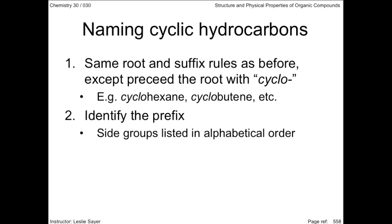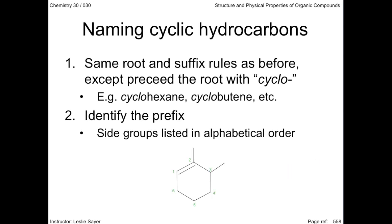For example, numbering the carbons in this manner gives us 1,6-dimethylcyclohexene, which is wrong when compared to the name we would get if the carbons were numbered going the other way. Instead of 1,6-dimethylcyclohexene, we get 2,3-dimethylcyclohexene — smaller numbers yielding the correct name.